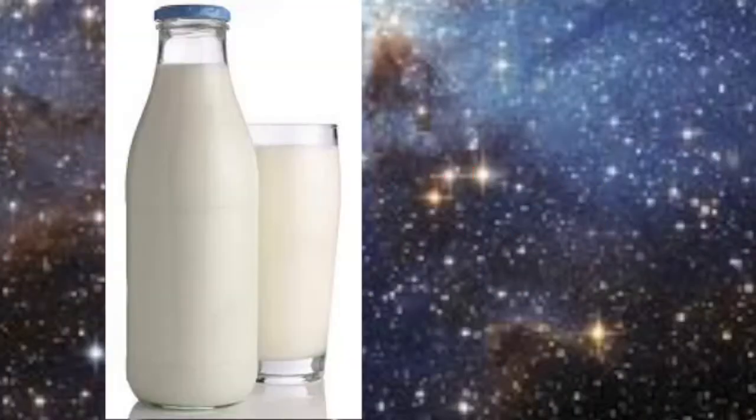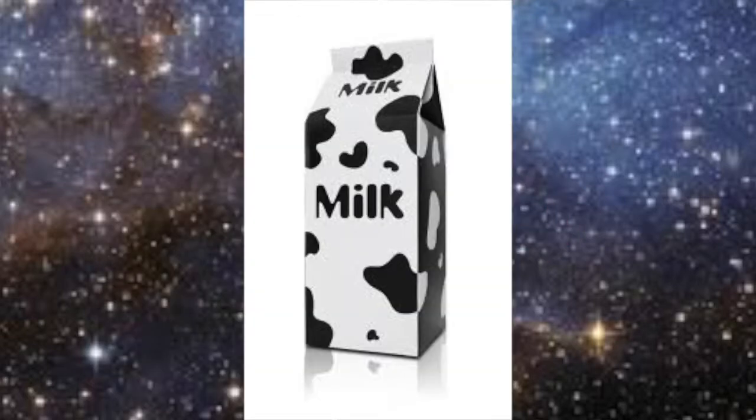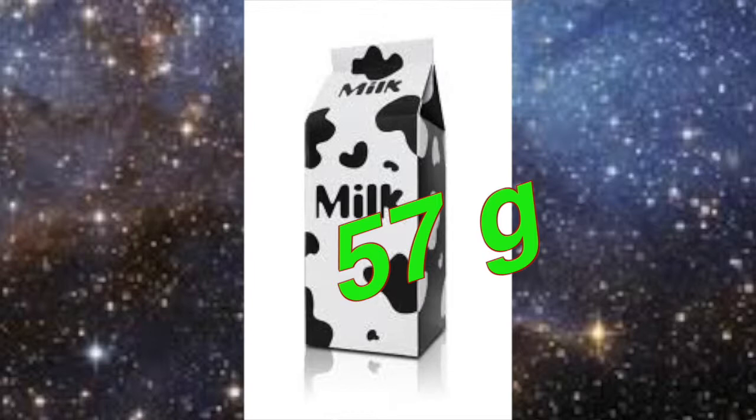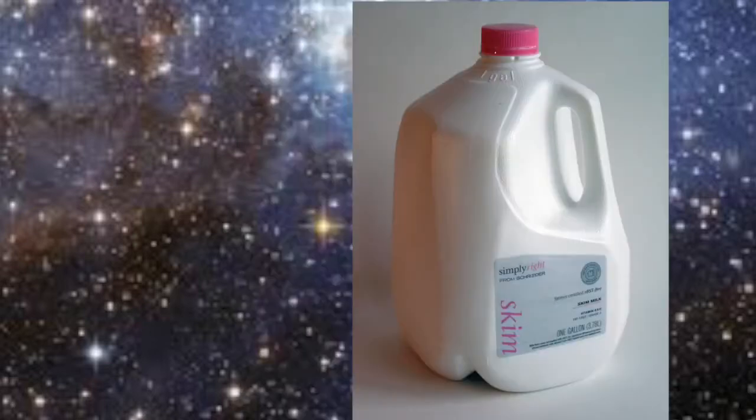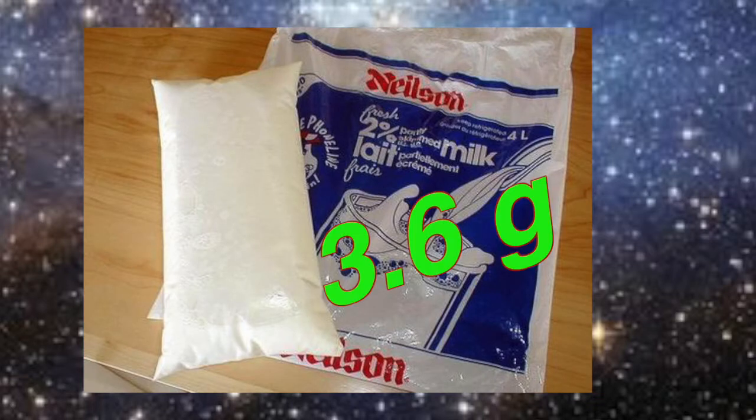The material weight of a liter-sized glass jug is 410 grams. The weight of a paper carton is 57 grams. The weight of a plastic carton is 51 grams. And the weight of a plastic bag is 3.6 grams.